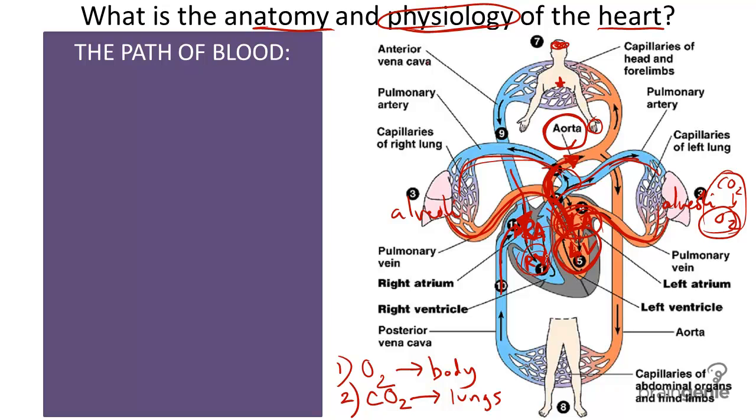So the aorta, as you can see, branches out to support needy cells in the top and bottom halves of the body, where blood is delivered to cells through capillaries. And as cells receive oxygen, it releases carbon dioxide, creating deoxygenated blood once again.